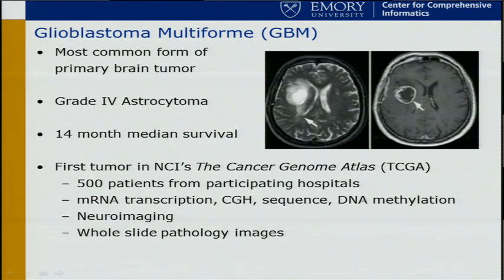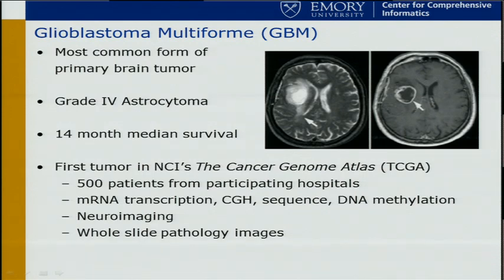As many of you know, glioblastoma is a grade four astrocytoma and is the most common form of brain tumors with very poor survival. It was one of the first tumor types to be included in the TCGA pilot project. mRNA data, copy number, and DNA methylation data is available, but it's not as obvious on the portal. There's also neuroimaging data on the Cancer Imaging Archive as well as whole slide imaging, and our group is mostly focusing on these two data types.